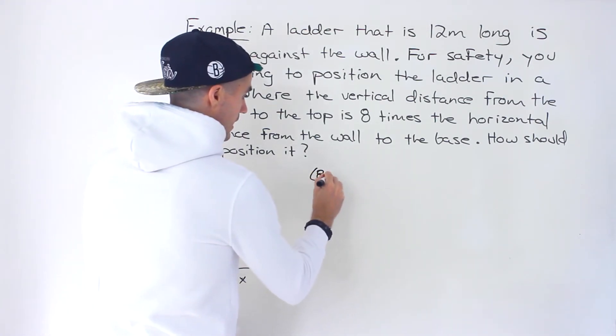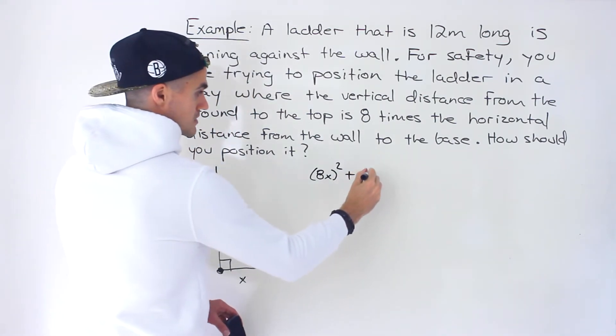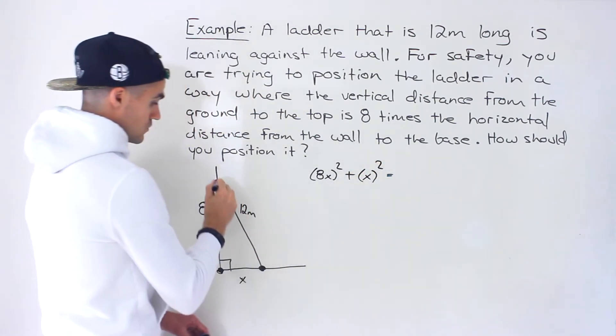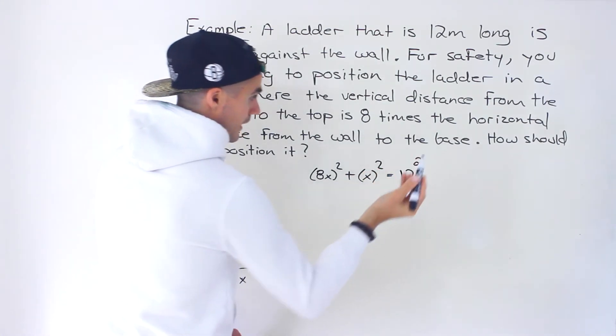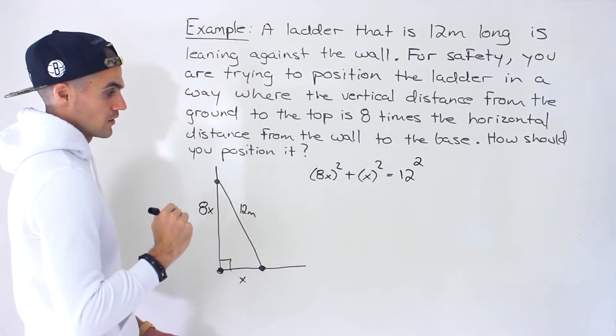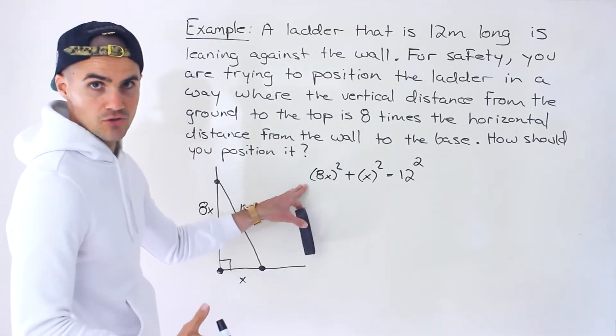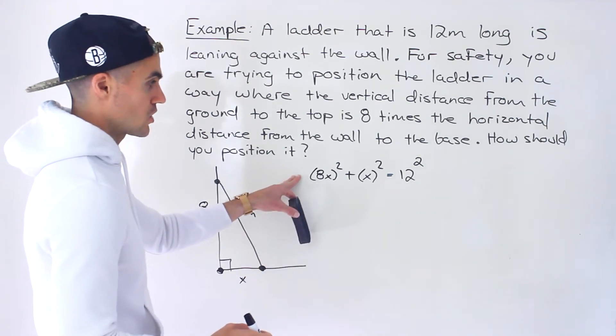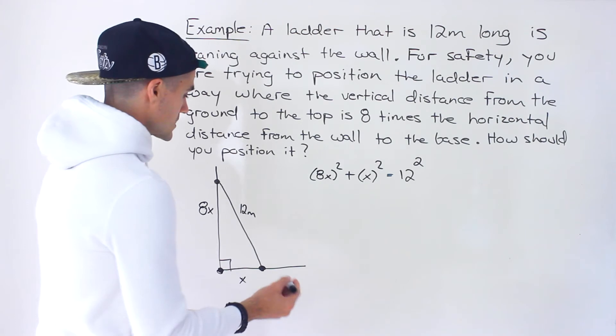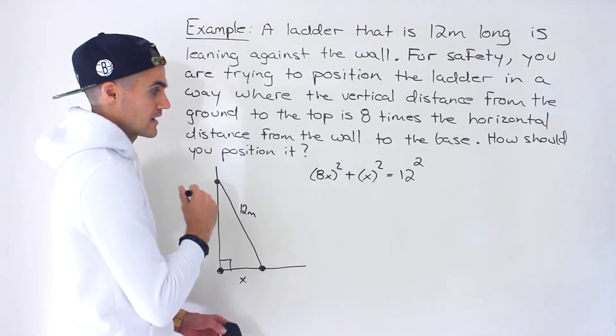Basically this side 8x squared plus this side x squared is equal to the hypotenuse 12 squared, which is the length of the ladder. It's more about reading the question and understanding how to set it up, because the algebra here is fairly easy. It's about understanding the problem and then setting up the equation.